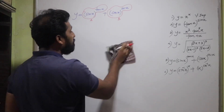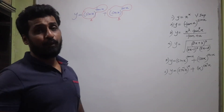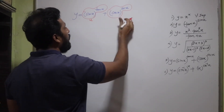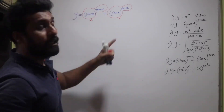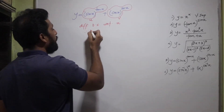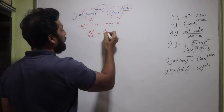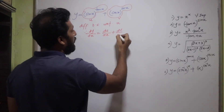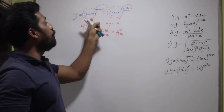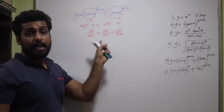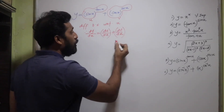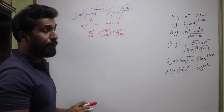To tackle this correctly, call the first term u = (sin x)^(tan x) and the second term v = (cos x)^(sec x), so y = u + v. Then dy/dx = du/dx + dv/dx. We find the derivatives of u and v separately using logarithmic differentiation on each.